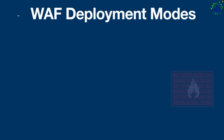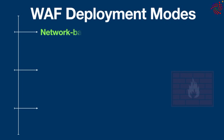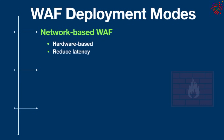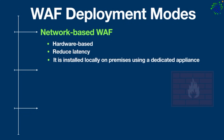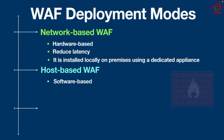A web application firewall can be deployed in three ways, depending on where your applications are stored. A network-based web application firewall is usually hardware-based and can reduce latency because it is installed locally on premises using a dedicated appliance. However, this is the most expensive type of web application firewall and requires storing and maintaining physical equipment.